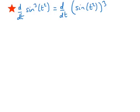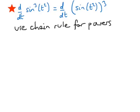When we differentiate, we don't work from the inside out — we work from the outside in using the chain rule. In this case, we use the chain rule for powers, which tells us we should start with the power on the outside, bring it down, decrease the power by 1, and multiply by the derivative of what is in the brackets.